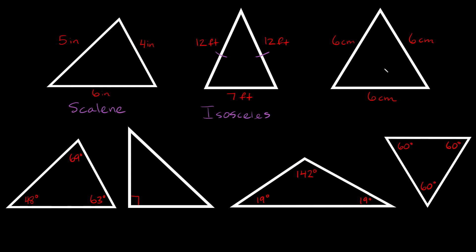The last way we can classify a triangle using the sides is if all the sides are the exact same length. You can see all the sides over here are six centimeters. So if they're all the same length, that's called an equilateral triangle. Another way you might see this marked is with a little line running through each side, which is just telling you that all the sides of this triangle are the exact same length — they're all congruent.